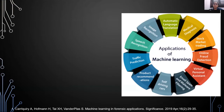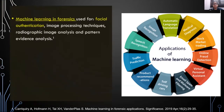There are several examples of machine learning in our day-to-day life. The most common are speech recognition systems like Siri and Alexa on iPhone and Android phones. We also have image recognition capabilities in our phones which allow facial features to be detected and phones to get unlocked. In the field of forensics, machine learning applications have been used for facial authentication, image processing techniques, radiographic image analysis, and pattern evidence analysis.